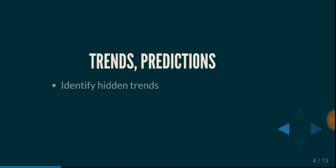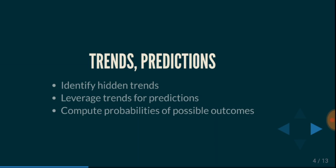The next two terms are trends and predictions — these are the results you expect. You expect the computer to identify hidden trends in the data that would be difficult for you to find manually, and to recompute them as new data arrives. You also want the computer to make predictions by leveraging those trends. It can also compute probabilities for possible outcomes — for example, given an animal and a different kind of plant, what are the probabilities it gets fatter or becomes healthier?